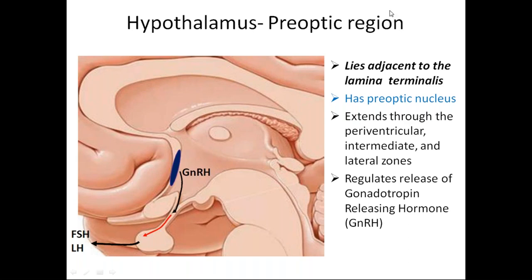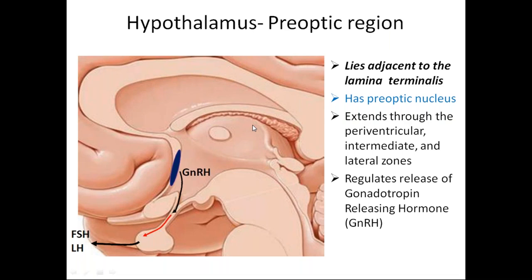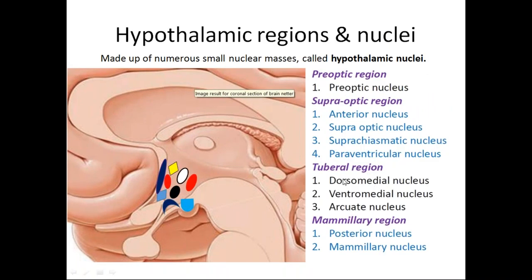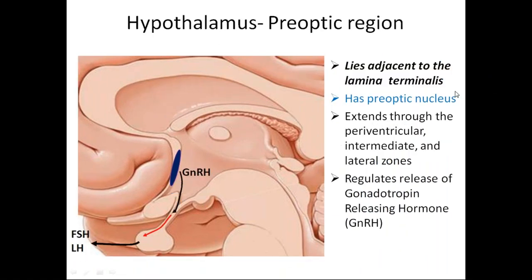Let's recall the nuclei. Students answered: preoptic region has one nucleus; supraoptic region has four nuclei; tuberal region has three nuclei; mammillary region has two nuclei — all correct. Now, the preoptic nucleus lies close to the lamina terminalis and extends through all three zones: periventricular, intermediate, and lateral. Its main function is to regulate the release of gonadotropin-releasing hormone.